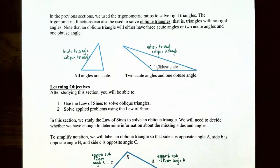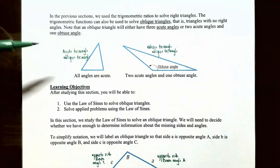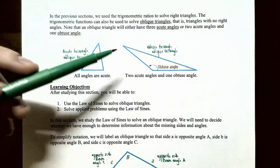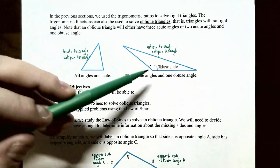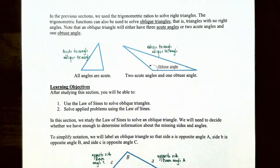An oblique triangle will either have three acute angles, where all three angles are less than 90 degrees, or two acute angles and one obtuse angle, where two angles are less than 90 degrees and one angle is greater than 90 degrees. The triangle on the left has three acute angles, and the triangle on the right has one obtuse angle, so it's called an obtuse triangle.